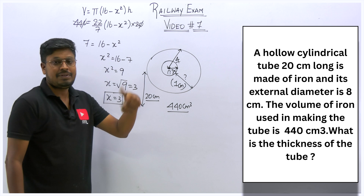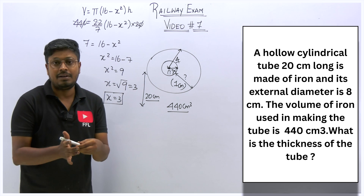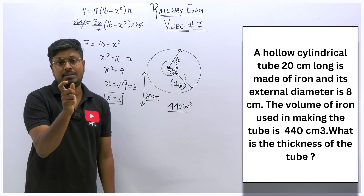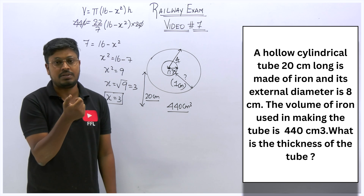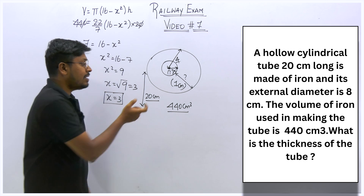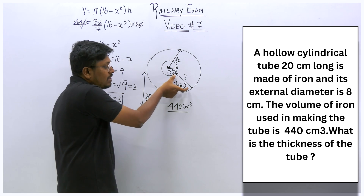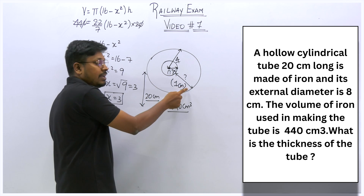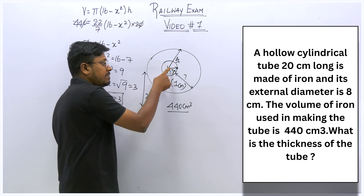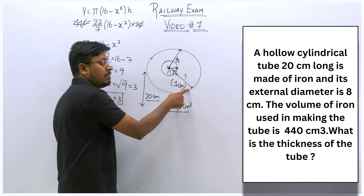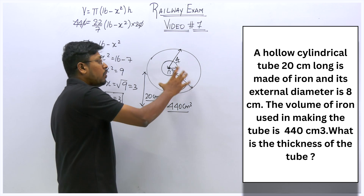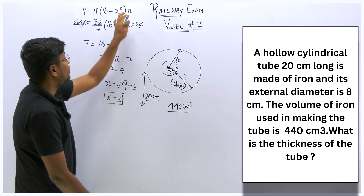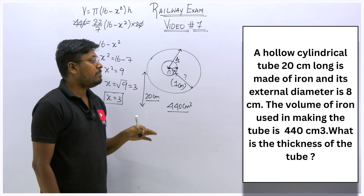Understand the difference: thickness of a hollow cylinder is simply external radius minus internal radius. Volume requires the full formula pi (R² − r²) × h. Thickness is just the length of the outer wall — external radius minus internal radius gives the thickness. The answer for question 2 is thickness = 1 cm.